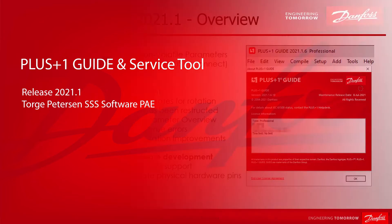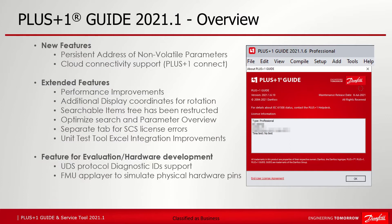Starting with the Guide features of this new release, the version name has been changed. Before this version it was a consecutive numbering like 10, 11 and 12 for the main version, followed by minor and revision or build numbers. The main version numbering has been changed to year dates followed by the minor and build number. This new Guide version is called 2021.1.6.10. In addition, a lot of fixes took place which are listed in the release notes. Please take a look at the Guide User Manual for more detailed information about the features and functionality.